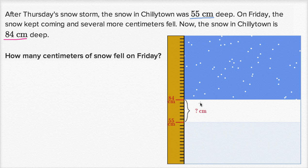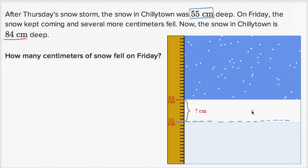Let's look at this diagram again so we can imagine what went on. After the storm on Thursday, the snow in Chiletown was 55 centimeters deep, and they show that right over here. So this 55 centimeters is this point on the ruler — this is how deep the snow was after the storm on Thursday.